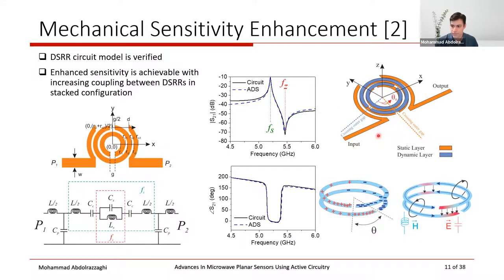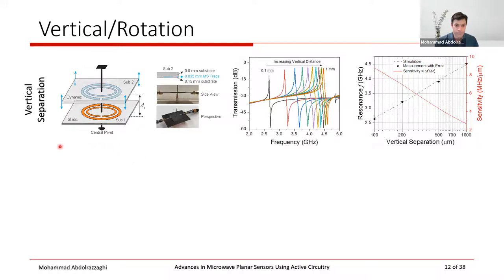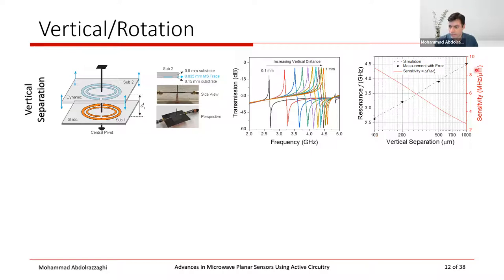Any disturbance of the second tag DSRR relative to the original DSRR brings a change in resonance frequency, studied in four categories. For vertical separation, the distance varies from about 100 micrometers to 1 millimeter, producing nonlinear variation because EM wave propagation in free space is nonlinear. Over this 0.1 mm to 1 mm range, frequencies change from 4.5 GHz down to 2.5 GHz, and for even 100-micrometer separations, a sensitivity of about 9–10 MHz per micrometer is achieved.